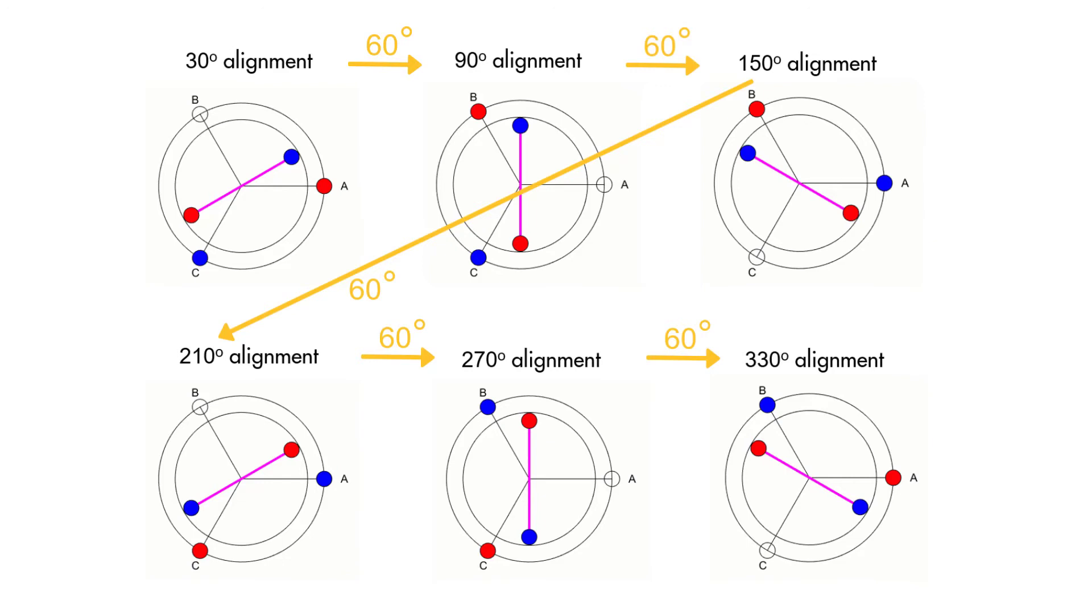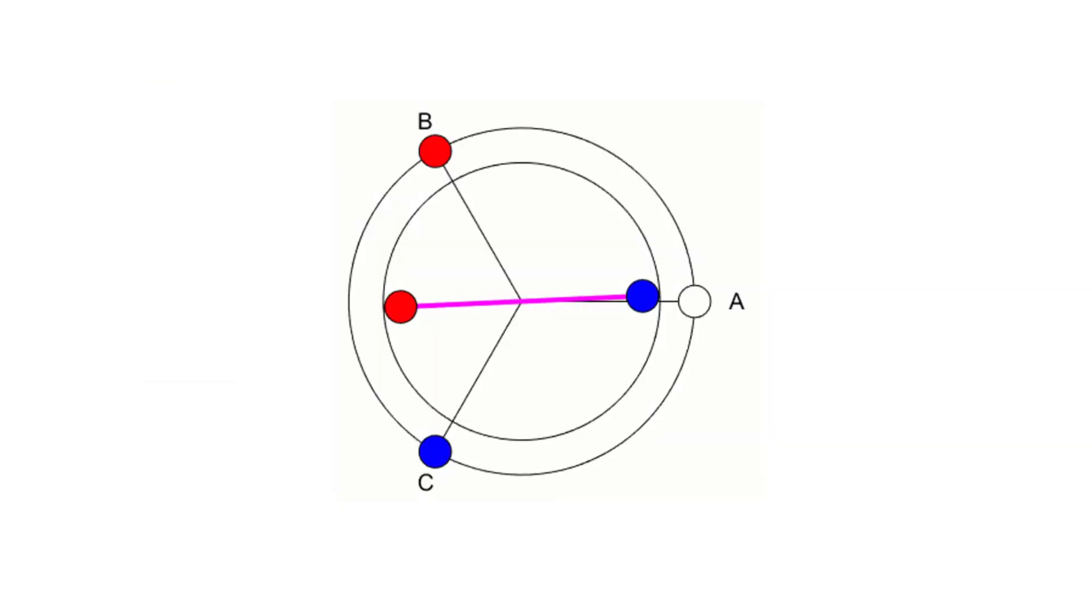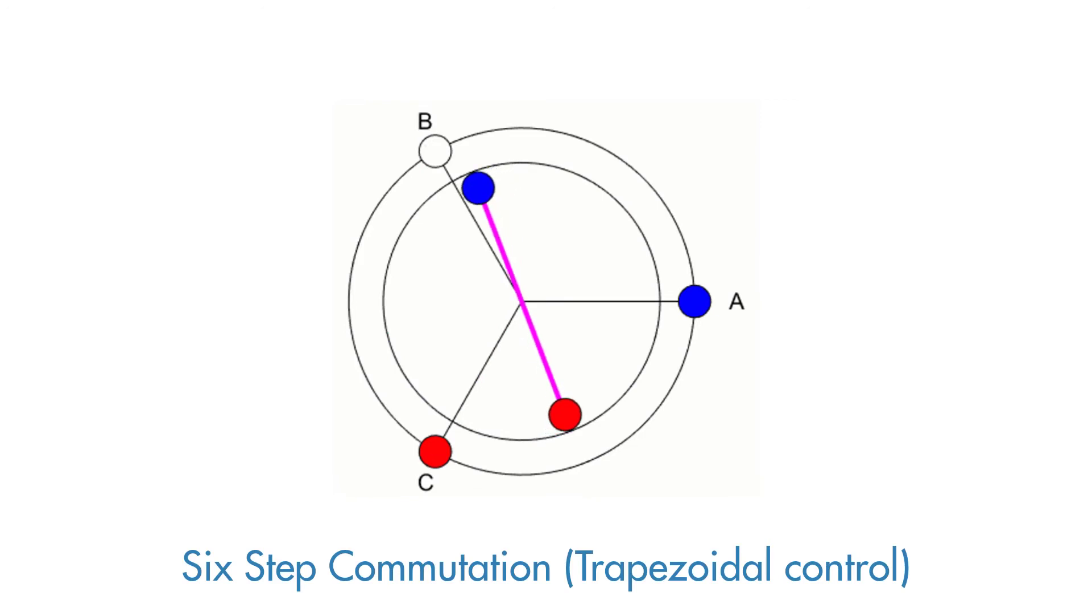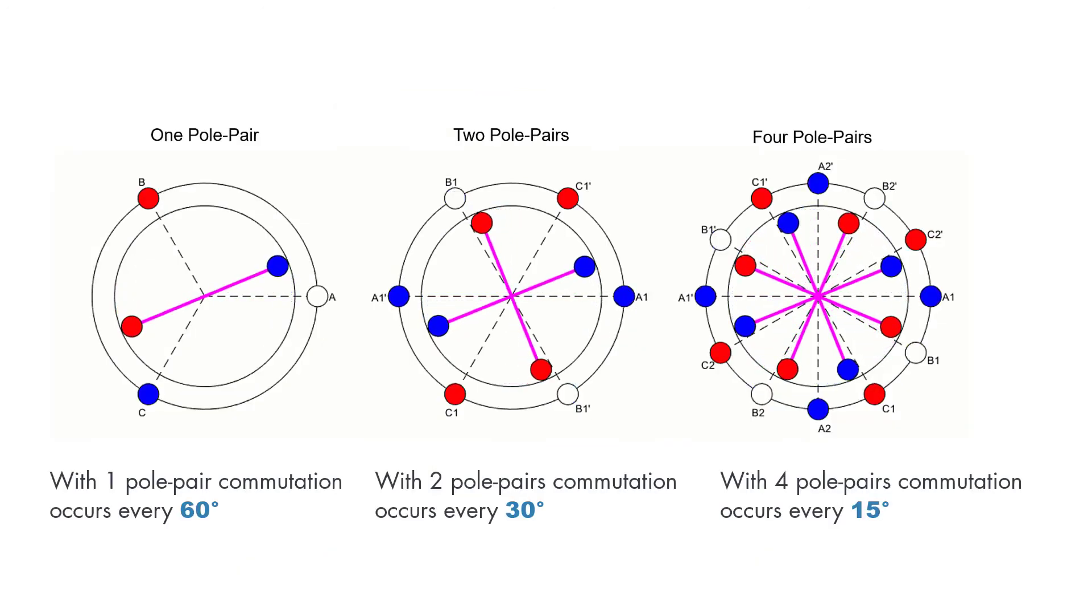What this means is, if we can commutate the correct phases every 60 degrees, we can make the motor spin. And this is called six-step commutation, or trapezoidal control. Note that, with more pole pairs, the commutation occurs more frequently.